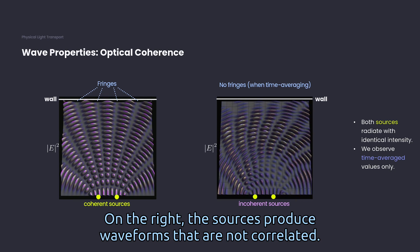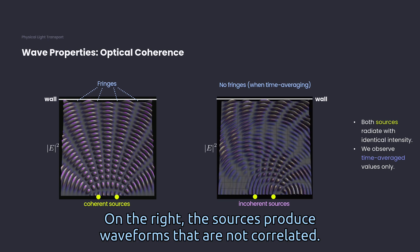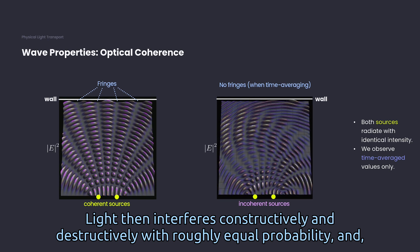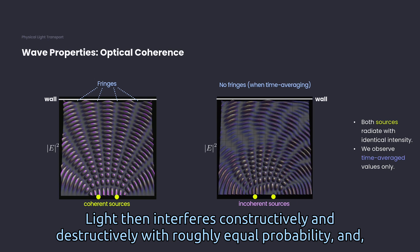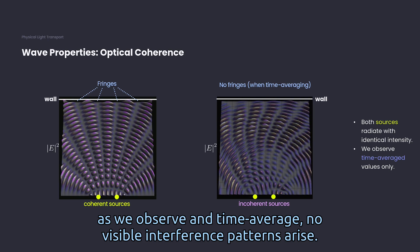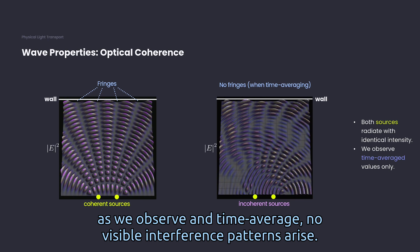On the right, the sources produce waveforms that are not correlated. Light then interferes constructively and destructively with roughly equal probability. And as we observe in time average, no visible interference patterns arise.